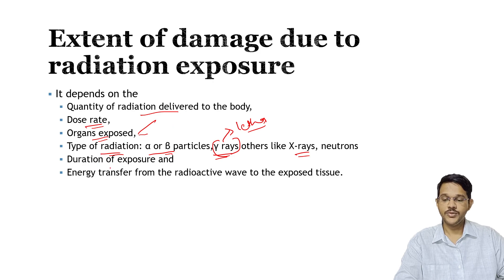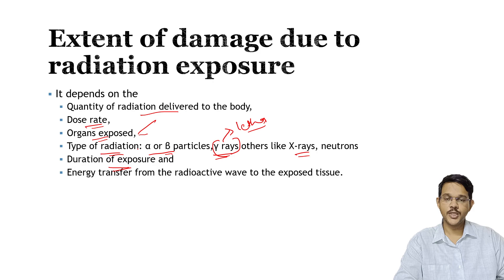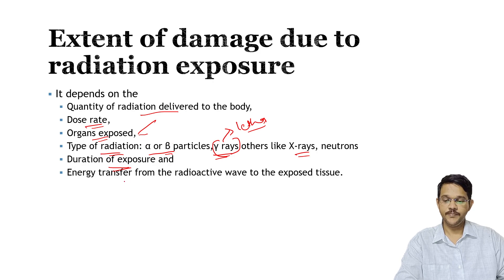The next factor includes the duration of exposure. Immediate small exposure to radiation may not cause severe damage, but if the person is continuously exposed to radiation, it can cause severe damage. The amount of energy transferred by the radioactive wave will also affect the extent of damage caused.